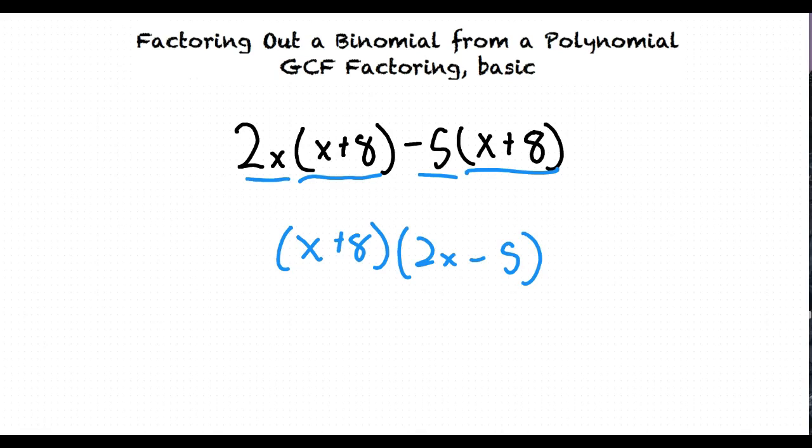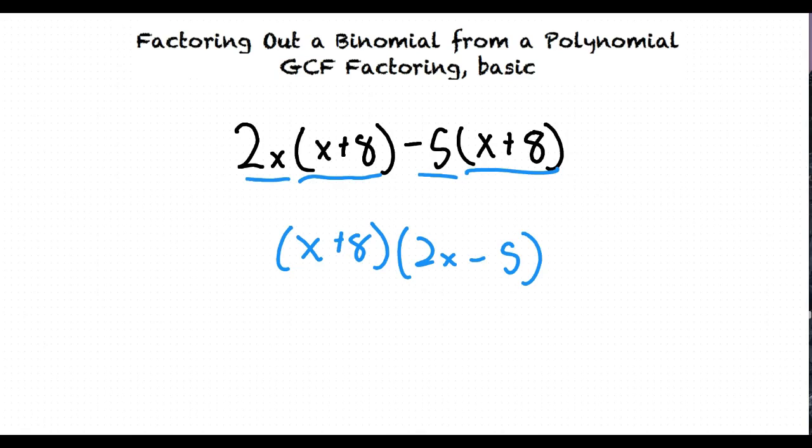What would happen if there is no coefficient or binomial in front of the polynomial? Great question. If there is no binomial present in front of the polynomial, then the integer left will just be 1.